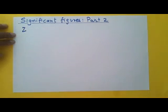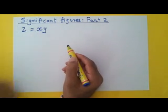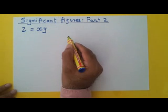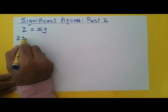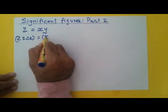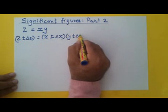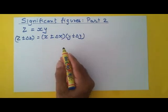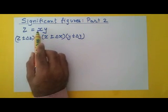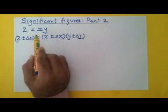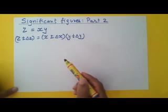Let us say we have a physical quantity Z which comes out of multiplication of two physical quantities X and Y. We will follow the same method as we did for addition or subtraction, so Z plus minus delta Z is equal to X plus minus delta X, multiplied by Y plus minus delta Y. Z is a physical quantity which comes out of a product of two physical quantities X and Y, and delta Z, delta X, and delta Y are the errors in the measurement of these three physical quantities.